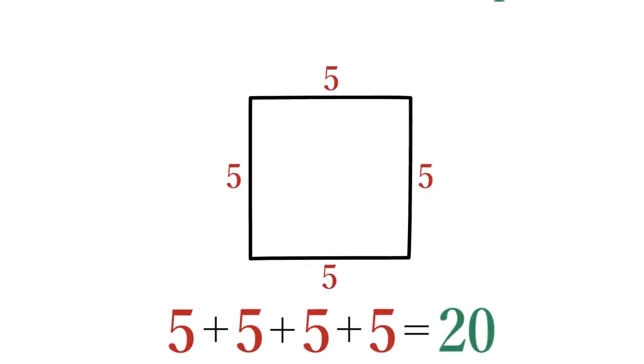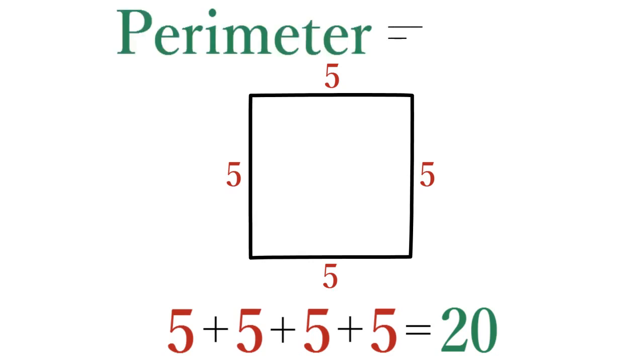A quicker way to perform this calculation is to multiply the length of the side by 4. 5 times 4 equals 20.